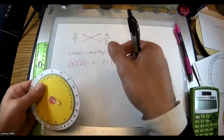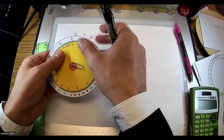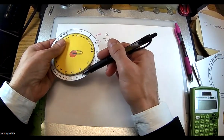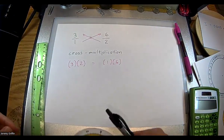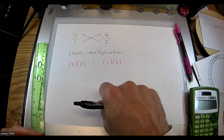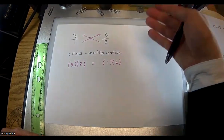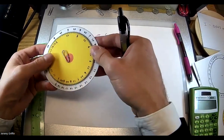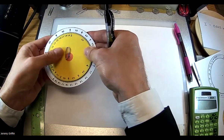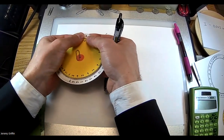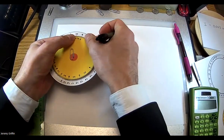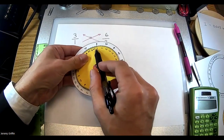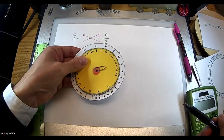You can also divide. What is six divided by two? Rotate the calculator so six aligns with two — that's your fraction six over two. Since that ratio equals all ratios around the circle, find the yellow one on the inside, and it points to the answer: three. Six divided by two equals three.